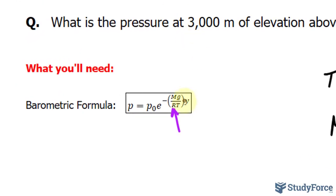The value of y will be 3,000. And the reason why we have this negative in the exponent is because the pressure must decrease as the altitude increases. So by placing this negative there, it ensures that the calculation shows a decrease in pressure as we go up.